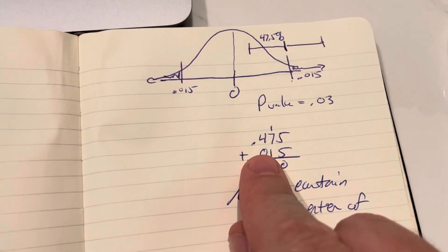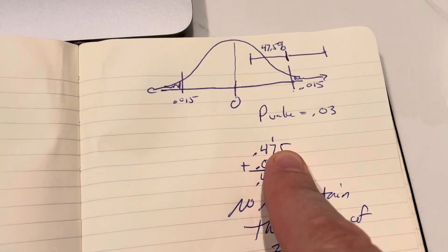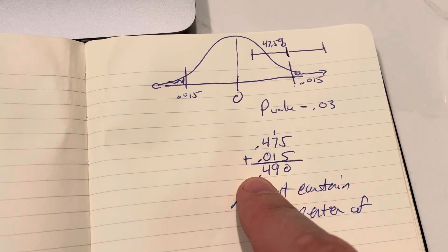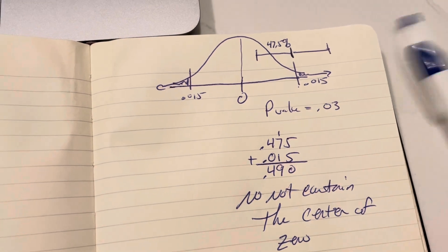Which means, as a decimal, it's 0.475. And I need to add on the 0.015. So I end up with an area of 0.490.